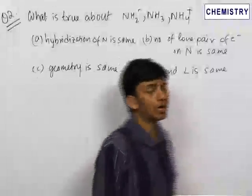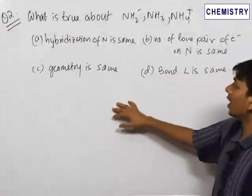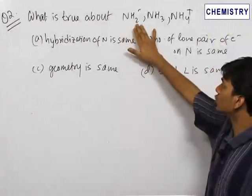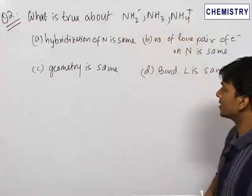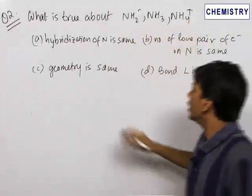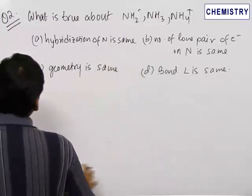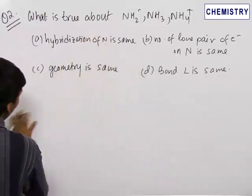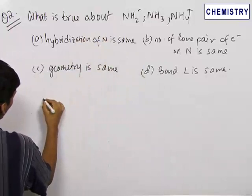In the second question, we have to find out what is true about NH₂⁻, NH₃, and NH₄⁺. Four options are given. To answer this question, we have to directly draw the structure of the three given ions and the NH₃ molecule.